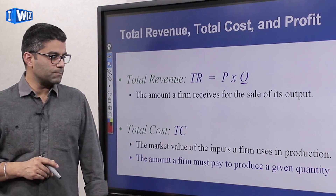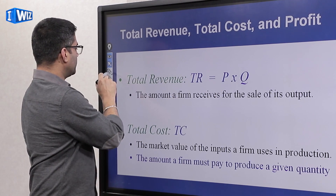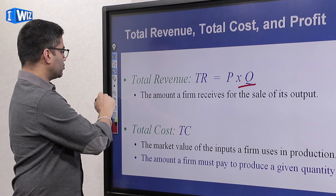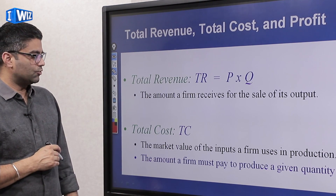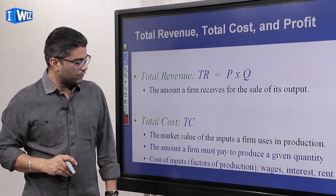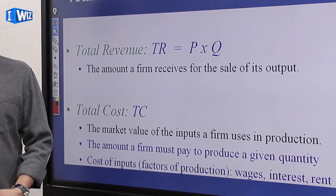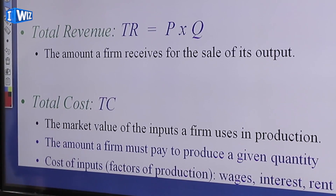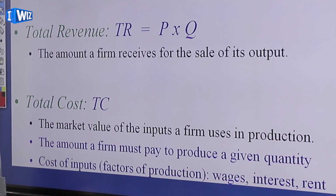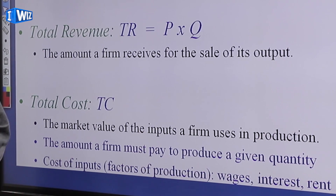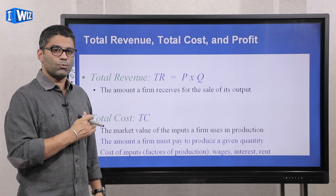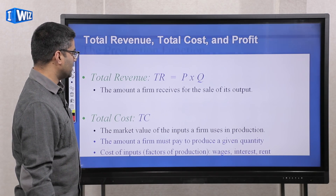The amount a firm must pay to produce a given level of output: Q refers to the output you're going to sell, and inputs — also sometimes referred to as factors of production — are what you need to be able to produce and sell those goods. What you pay those factors: if you hire a person, you pay them salary or wages; if you're renting a building, you pay rent; if you're borrowing money to buy machines and equipment, you pay interest on that.